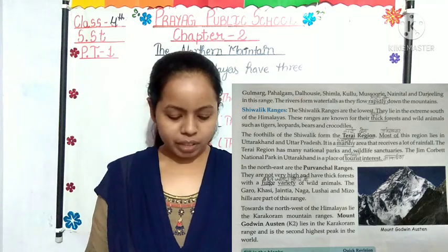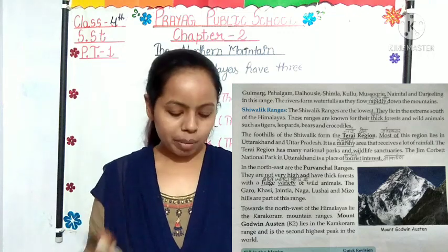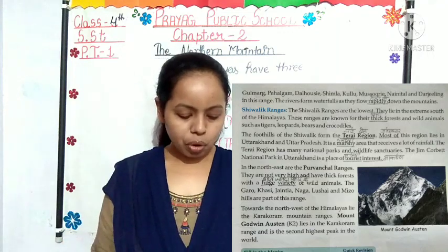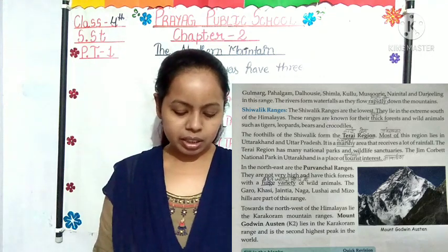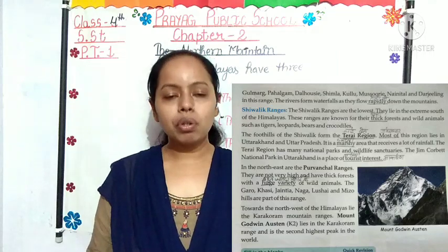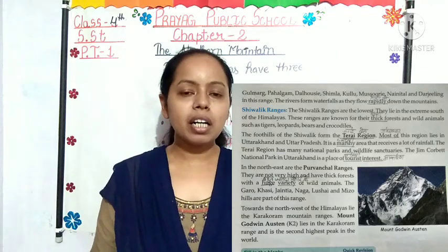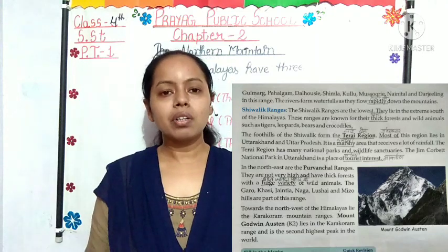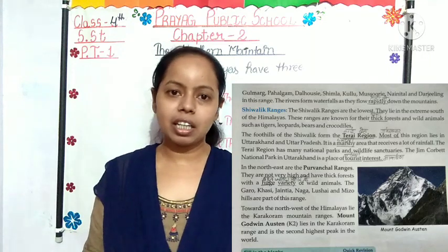Towards the northwest of the Himalaya lies the Karakoram Mountain Range. Mount Godwin Austin, also known as K2, lies in the Karakoram Range and is the second highest peak in the world.